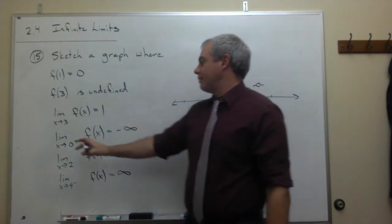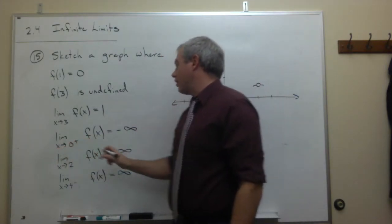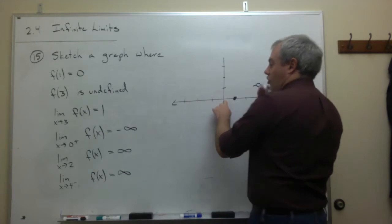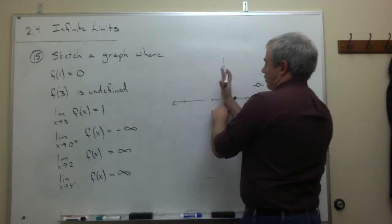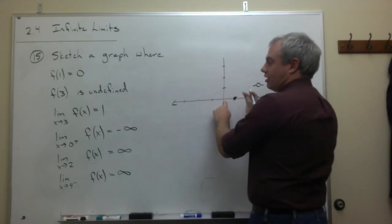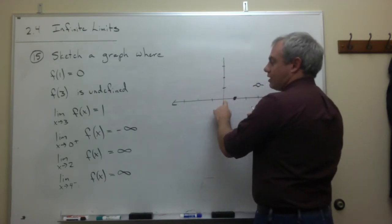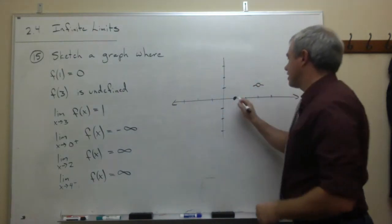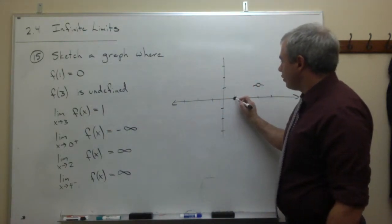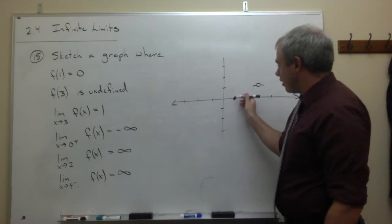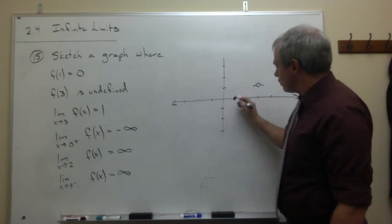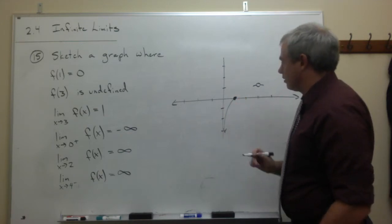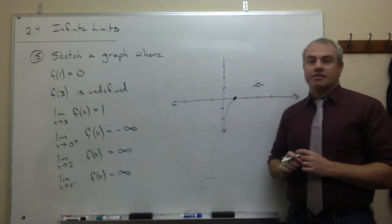Next, we have the limit as x goes to 0 from the right of f(x) equals negative infinity. So as I approach x = 0 from the right, the function shoots down to negative infinity. Since I already have the point at (1, 0), I'll draw an arrow going down toward negative infinity as we head toward 0.